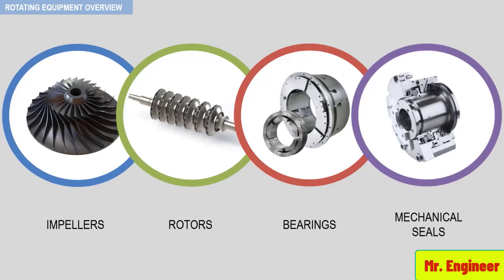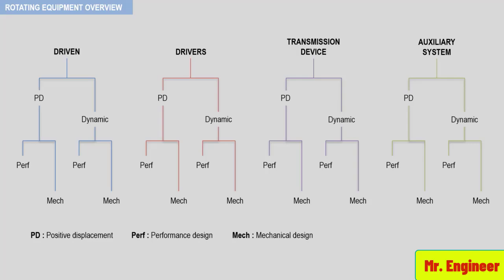A bearing performs the same function, whether it is in a pump, a compressor, a gearbox, a turbine, or any other type of rotating equipment. Take a look at the following figure here — it shows how both performance and mechanical functions are similar, regardless of the classification or type of equipment.